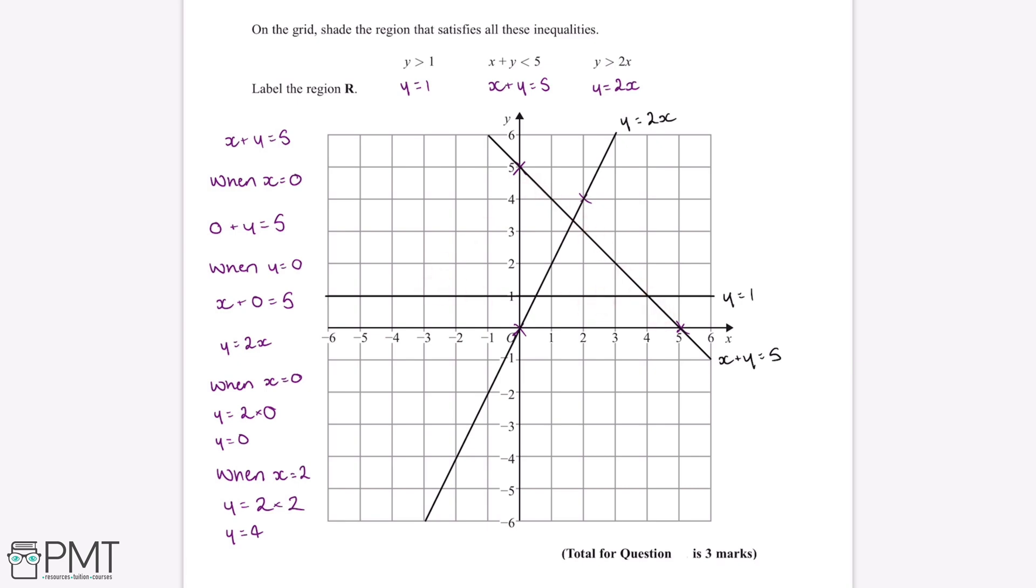Now the final inequality, y is greater than 2x. We can use the same process as before. So if we choose the point 1, 3, and we can substitute these values in. And this will give us 3 is greater than 2 multiplied by 1. So we can therefore work out that the region in which y is greater than 2x is this region over here.